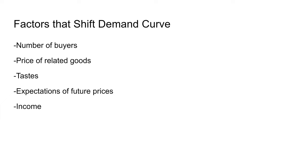Price of related goods. First, substitutes are goods that can be substituted — for example, tuna and salmon. Complements are goods that go together, like hot dogs and hot dog buns. For substitutes, when the price of the substitute goes down, the demand for the good we're interested in shifts to the left, because people will buy the cheaper substitute. For complements, if the price of the complement goes down, the demand for our good shifts to the right, because it's now cheaper to get the complement.